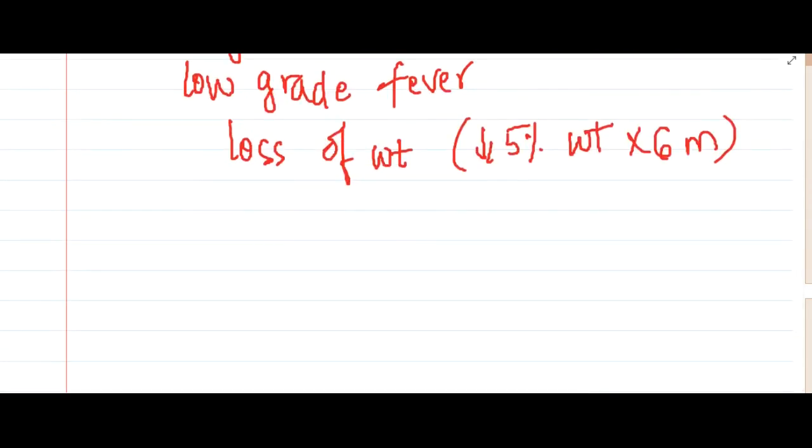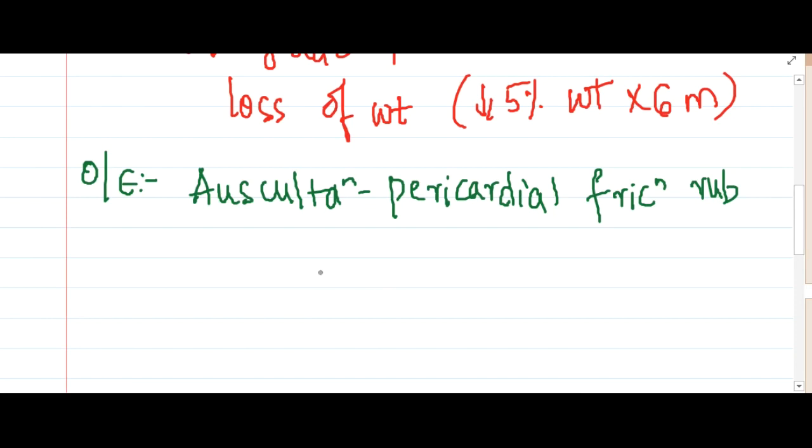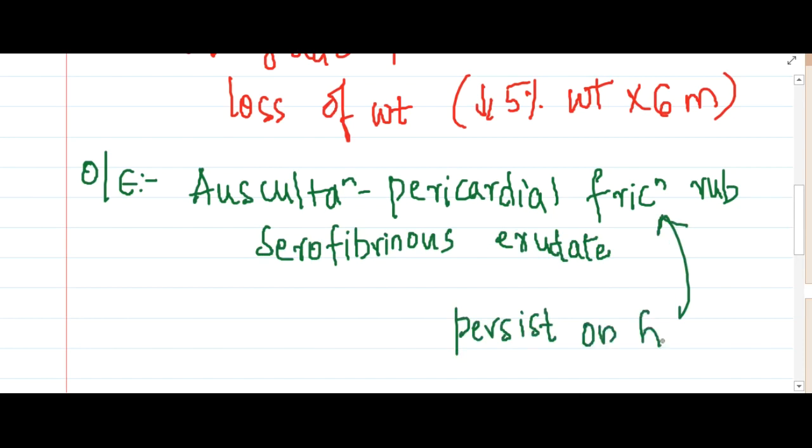On examination, it is pericarditis. So on auscultation, you will find the presence of pericardial friction rub. This pericardial friction rub occurs due to the presence of inflammation between the layers of the heart. The pericarditis present in tuberculosis has serofibrinous exudate. This pericardial friction rub will persist on holding the breath.